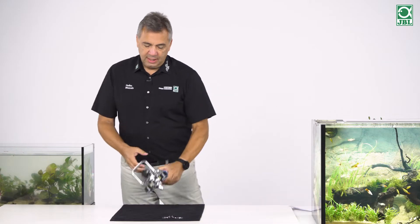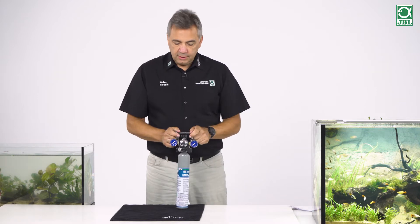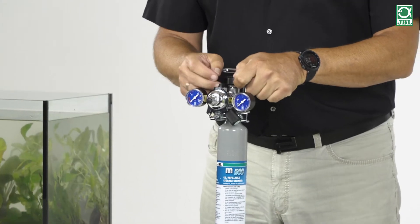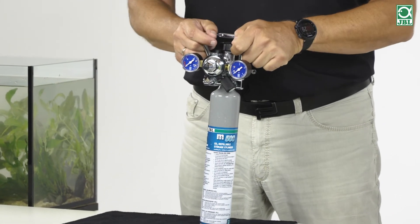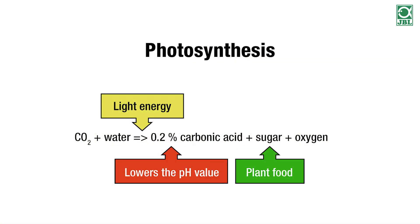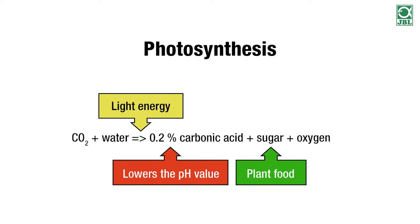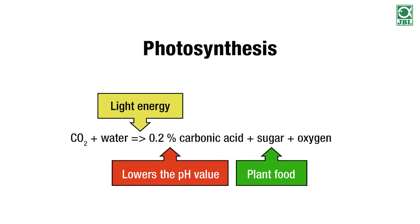What do the plants actually do with the CO2? CO2, also called carbon dioxide, is the main source of food for plants. We all learned about this in school and in most cases forgot it again very quickly — photosynthesis. In photosynthesis, plants do something unique: they combine water with the gas CO2 and, using light energy, turn it into sugar — their main food. In doing so, they create oxygen as a by-product.